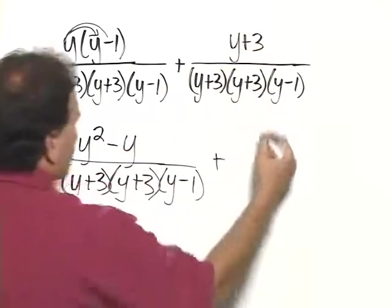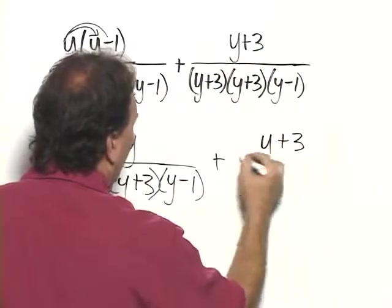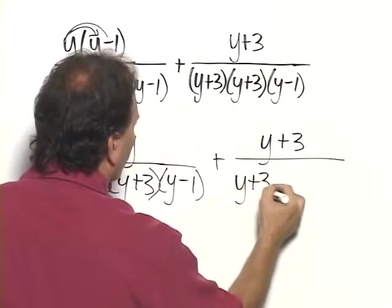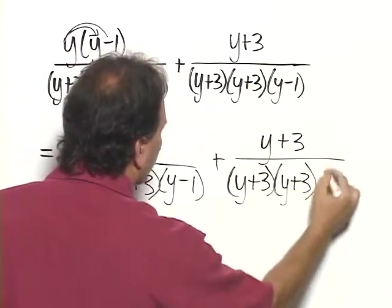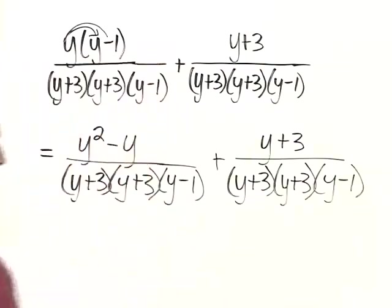plus, and this is already simplified, y plus 3 over y plus 3 times y plus 3 times y minus 1.